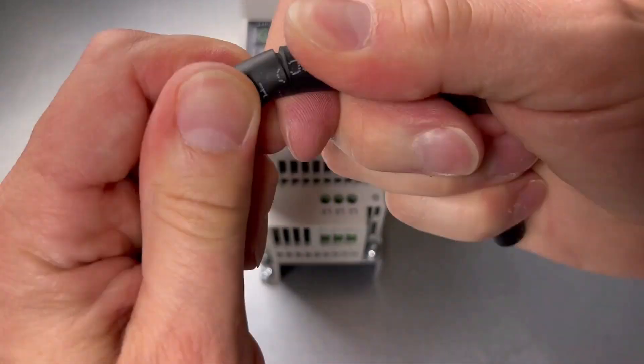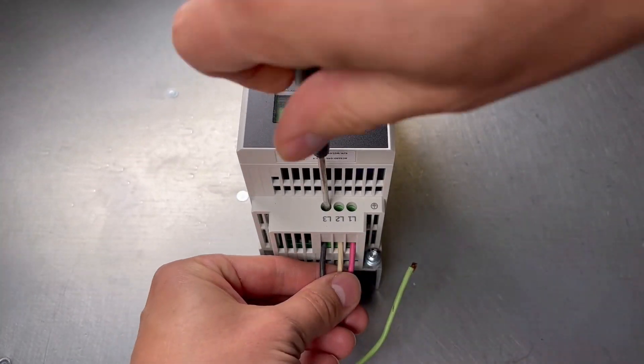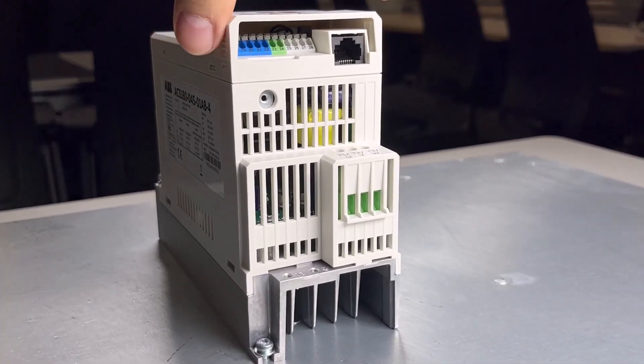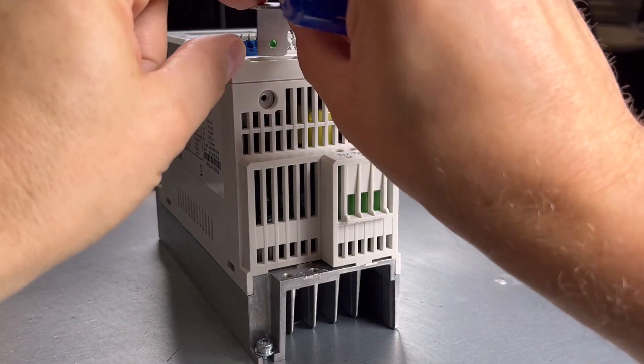Prepare the input power cable conductors. Connect the phase conductors of the input power cable. Remove the front cover. Insert the grounding clamp into the slot and fasten it with the screw.